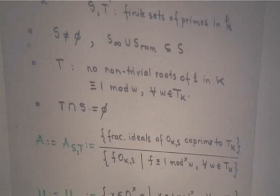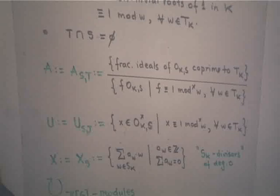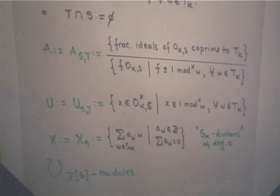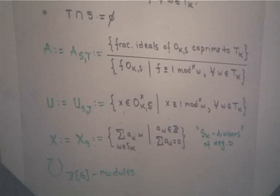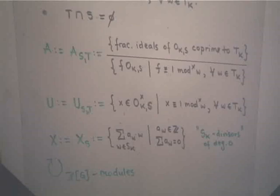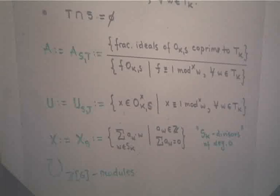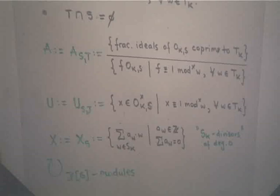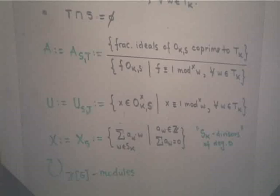To this setup I can associate some arithmetic objects. The first one is a generalized ideal class group — the so-called S,T ideal class group. These are fractional ideals in the ring of S-integers of the top field which are coprime to T, modulo principal fractional ideals in this ring which have a generator congruent to 1 modulo every single prime W in T_K. This is an ideal class group; it's finite, and it has a class field theoretic interpretation via the Artin reciprocity map.